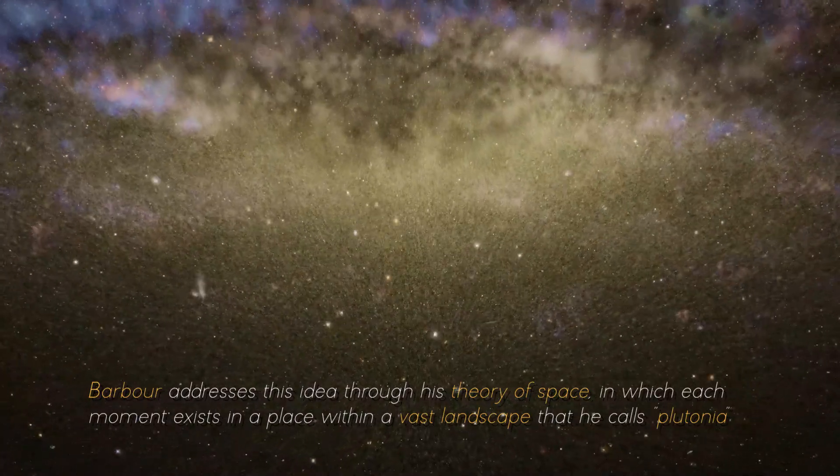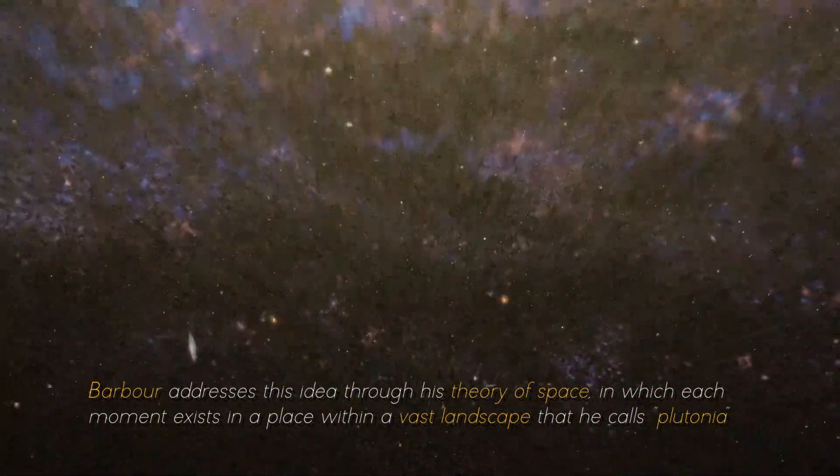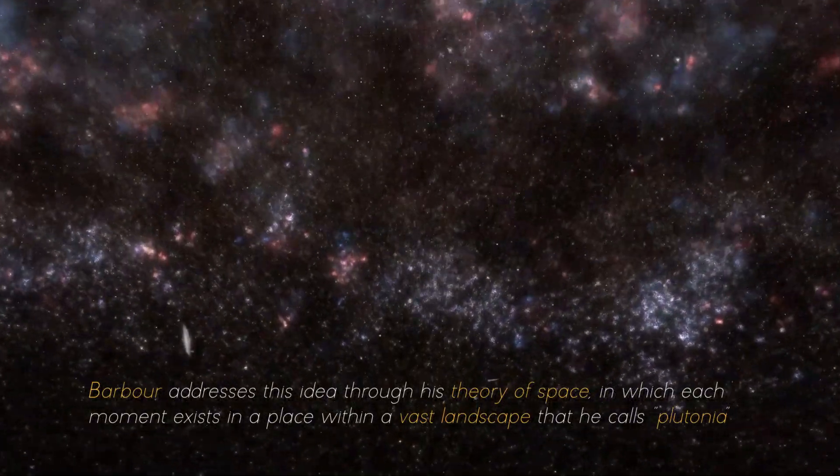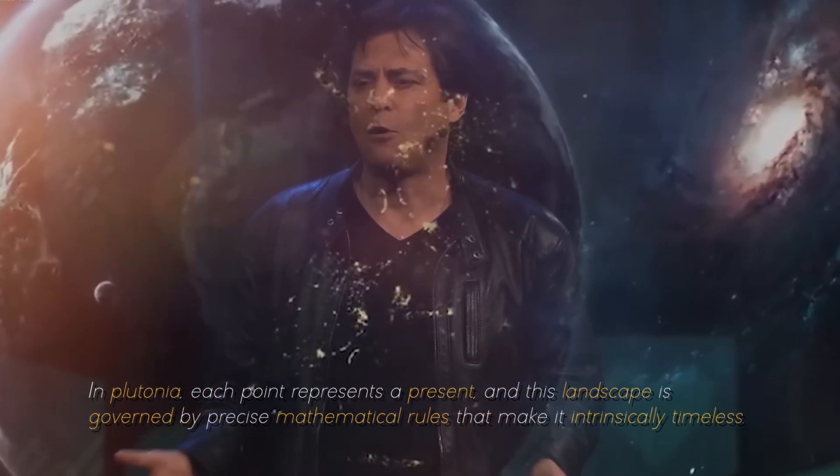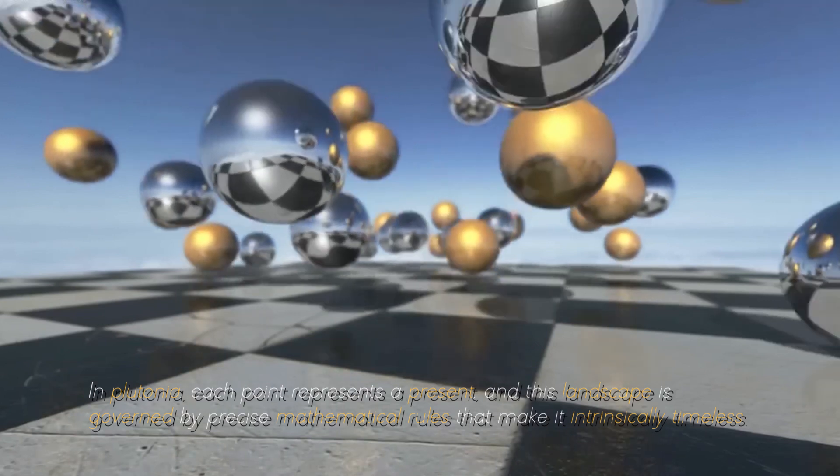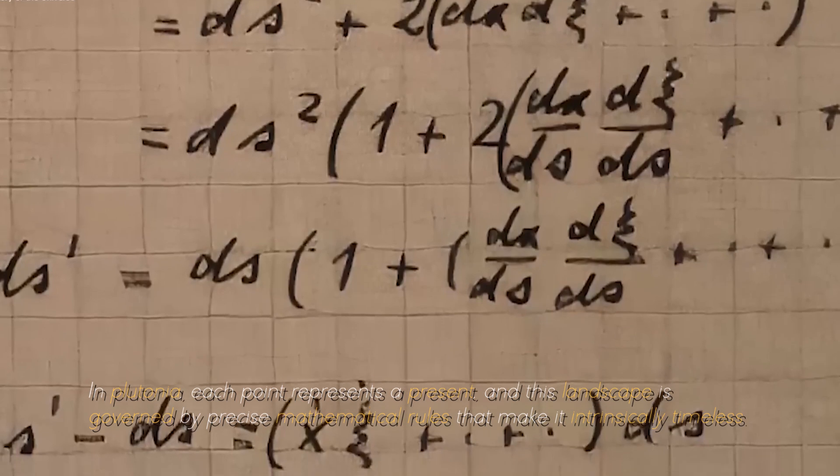Barbour addresses this idea through what he calls Platonia. In Platonia, each point represents a present, and this landscape is governed by precise mathematical rules that make it intrinsically timeless.